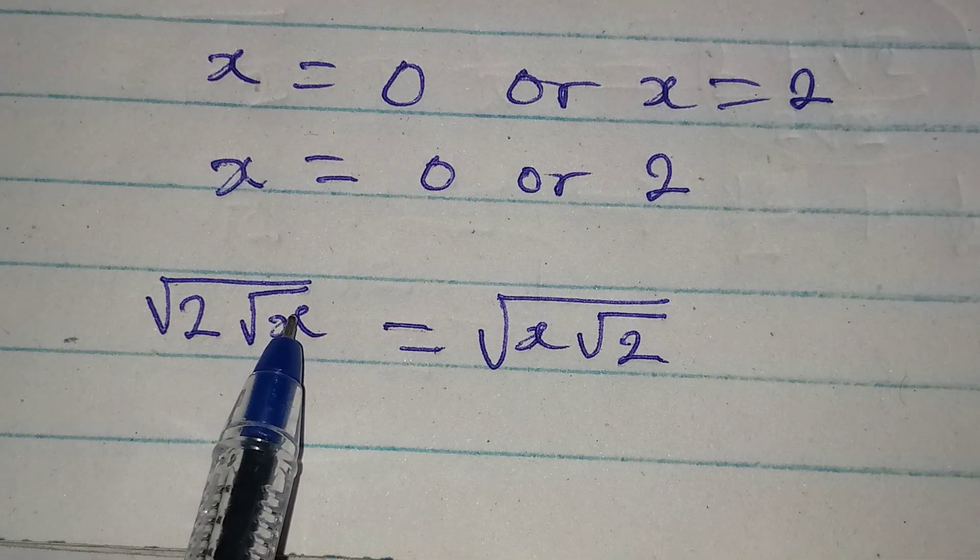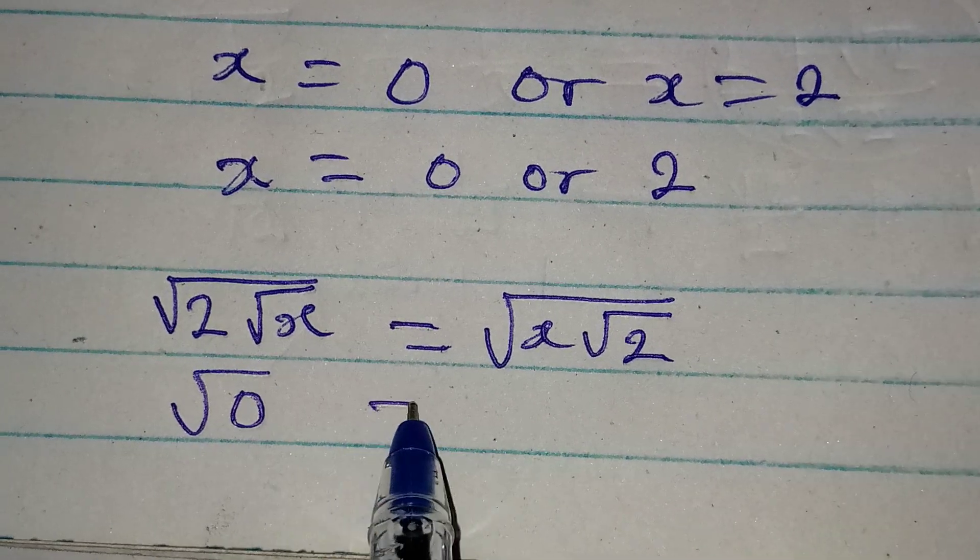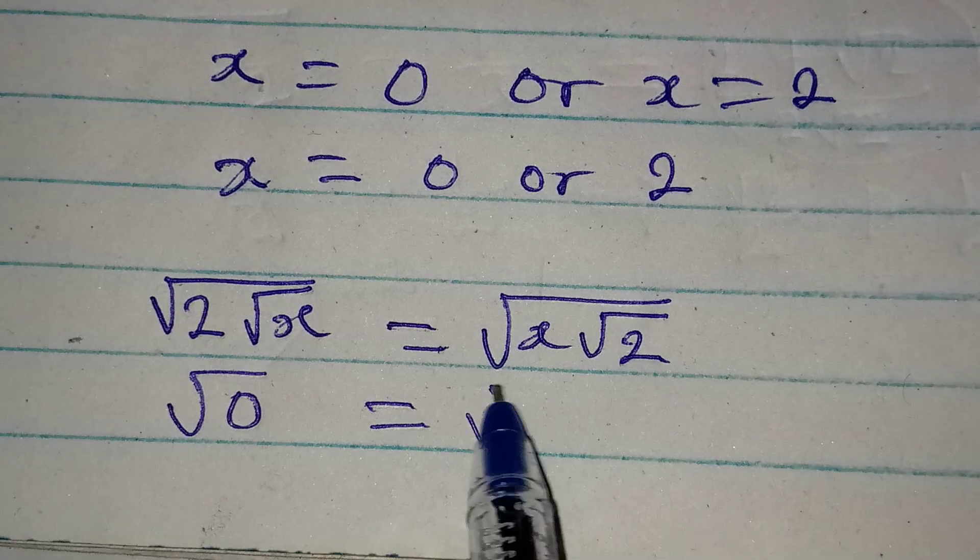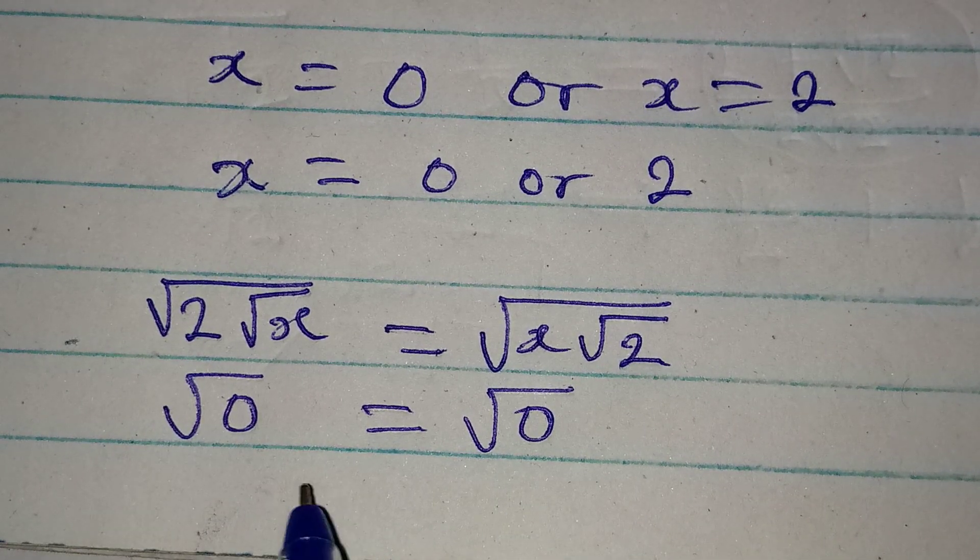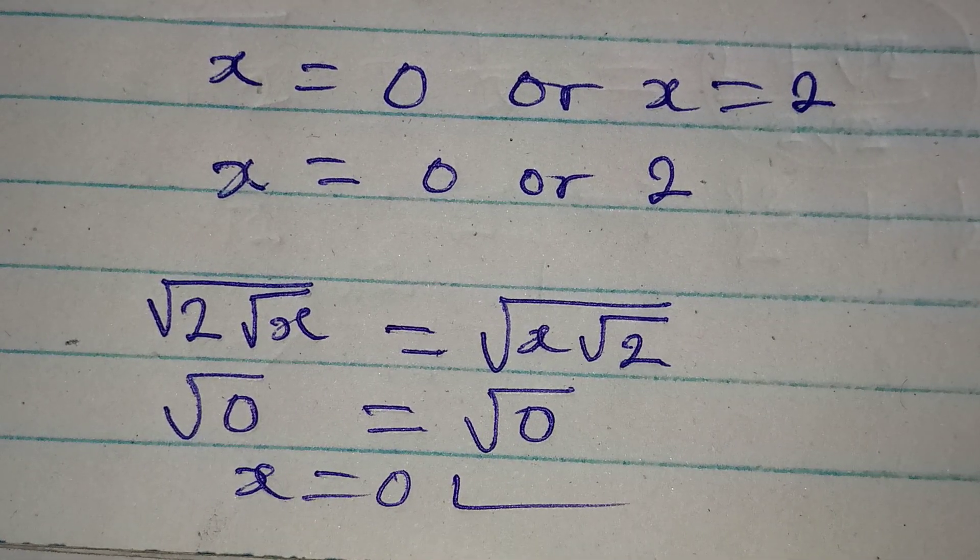If we put 0 here, it means that 2 times 0 will still give us 0, so we have square root of 0 on the left. 0 times root 2 will still give us root 0. So this means that our x equal to 0 satisfies the equation.